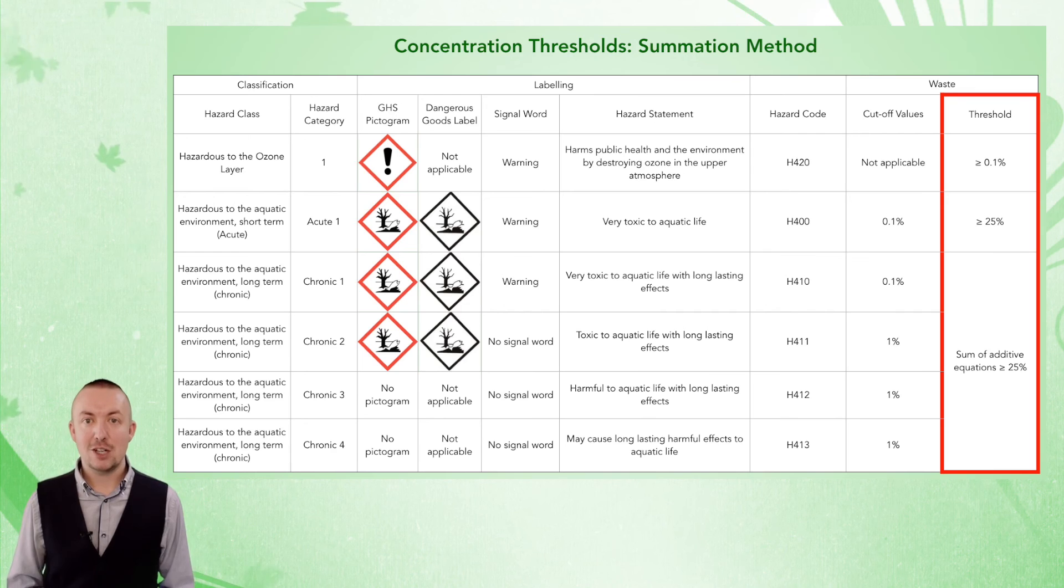For the chronic aquatic hazard, a series of additive formulas are used to determine whether the substances are above the thresholds required for the waste to be categorized as HP 14.